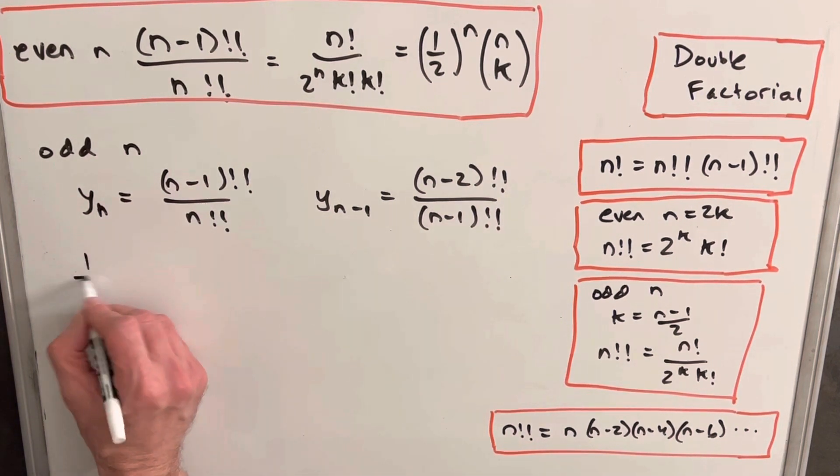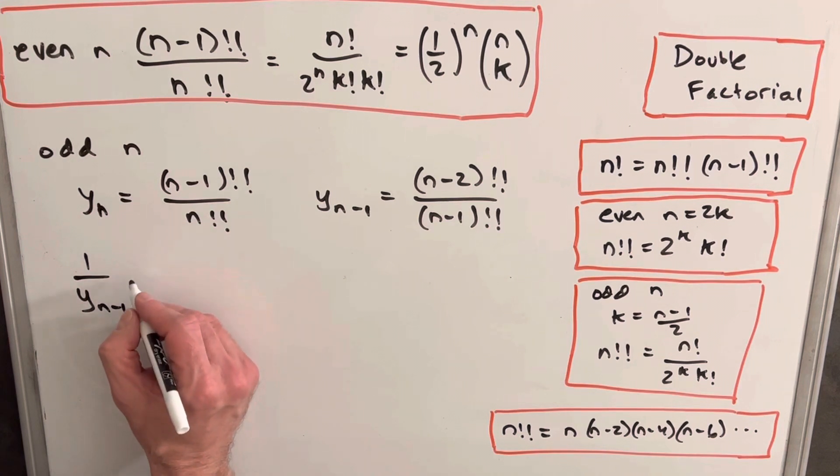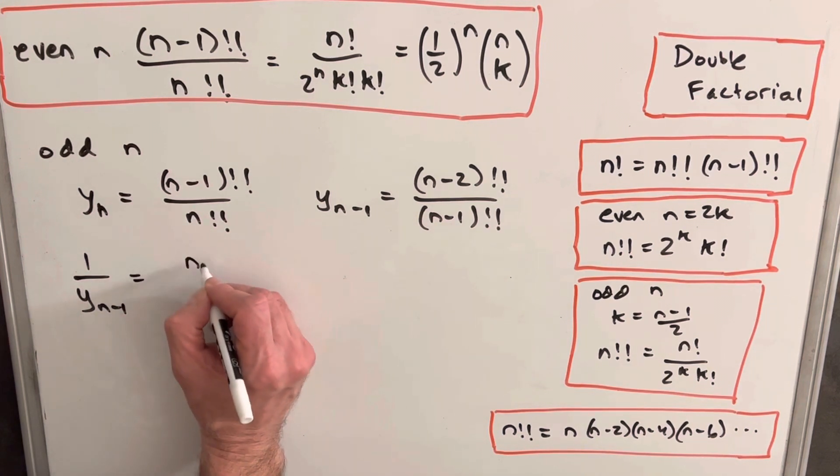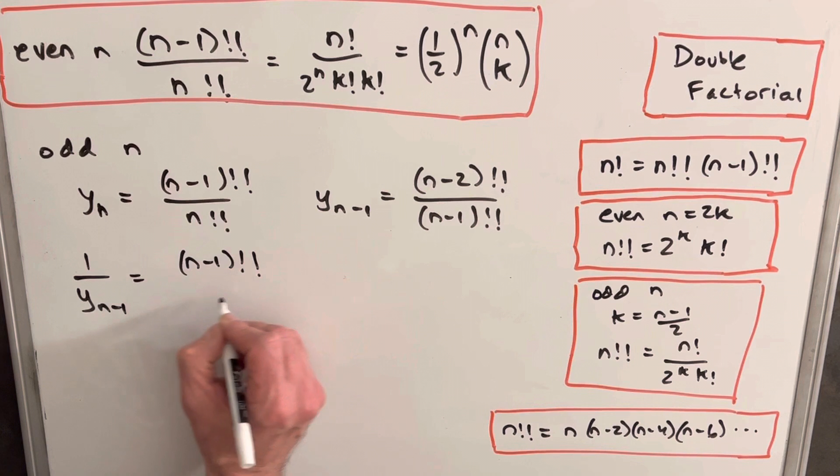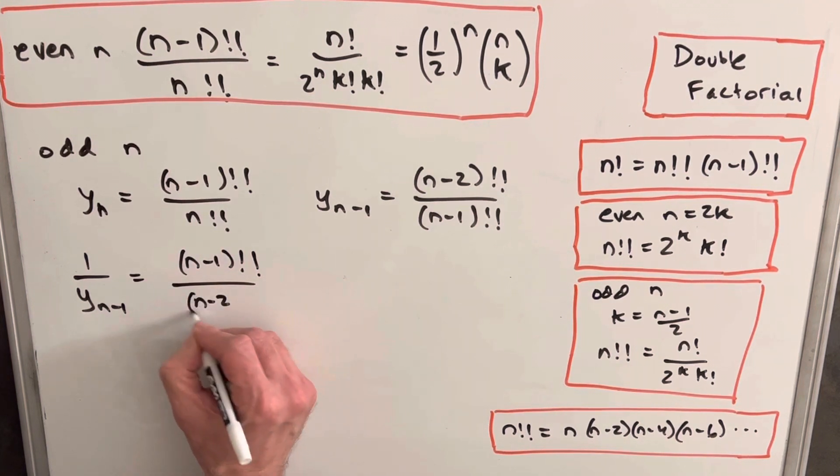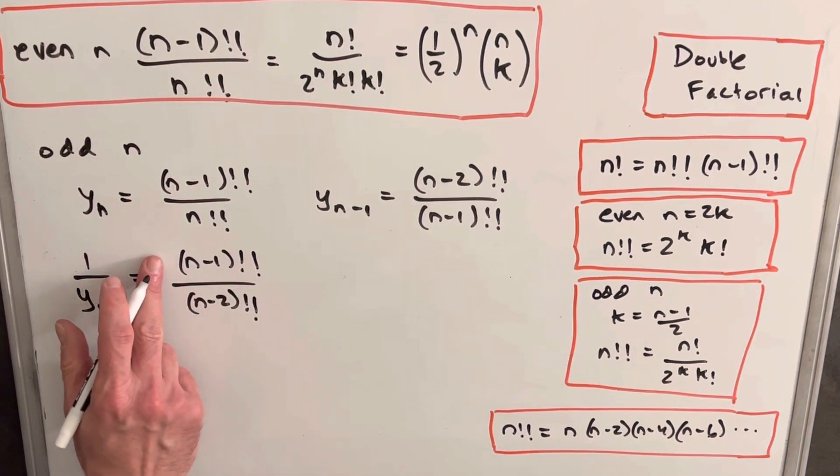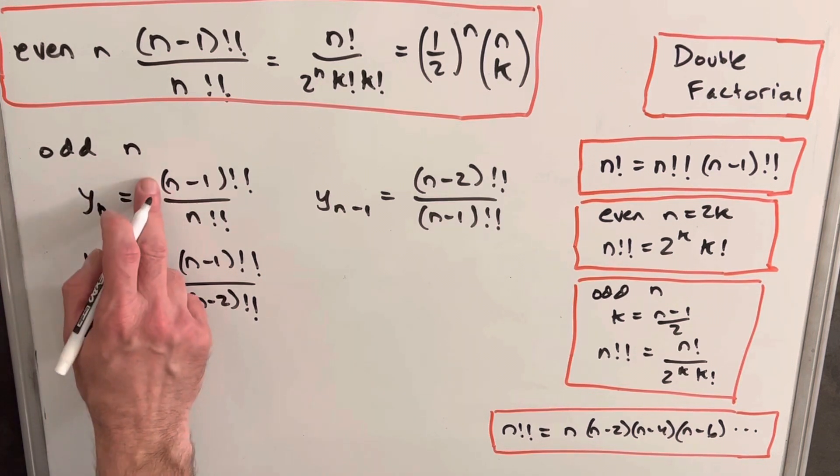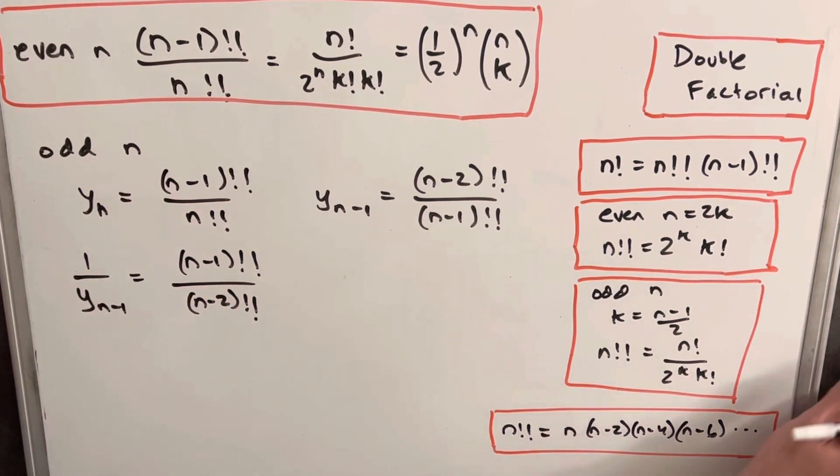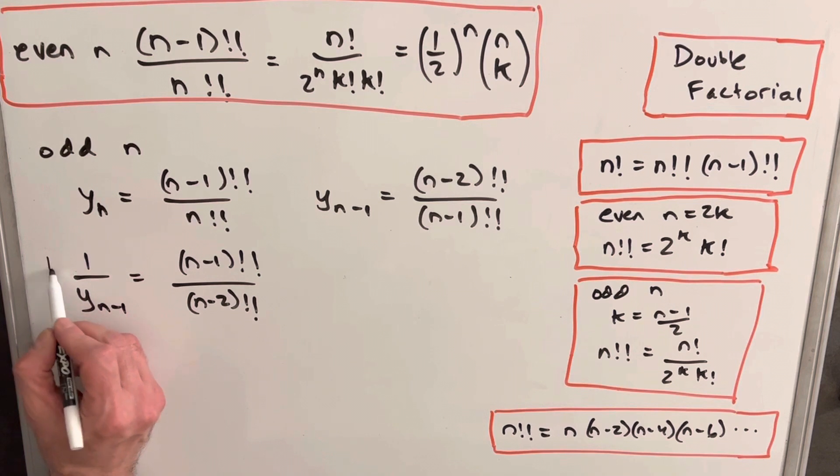Now if we flip this, if we look at the reciprocal, 1 over y_n minus 1, we're going to have n minus 1 double factorial over n minus 2 double factorial. And we start to notice, actually we have the same numerator now as the expression we want. And then from here what we could do, let's just multiply both sides by 1 over n.